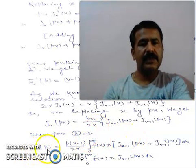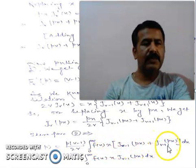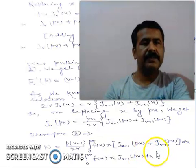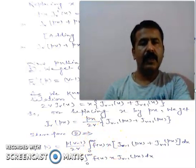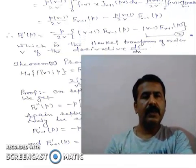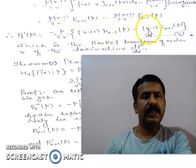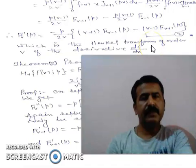Equation 2 becomes f'_v(p) equal to p·(v-1)/(2v) times the integral from 0 to infinity of f(x)·[j_{v-1}(px) + j_{v+1}(px)] dx. After simplification we get the result: minus [p/(2v)]·[(v+1)·f_{v-1}(p) minus (v-1)·f_{v+1}(p)]. This is equation number 3, which is the Hankel transform of the first derivative of order v.